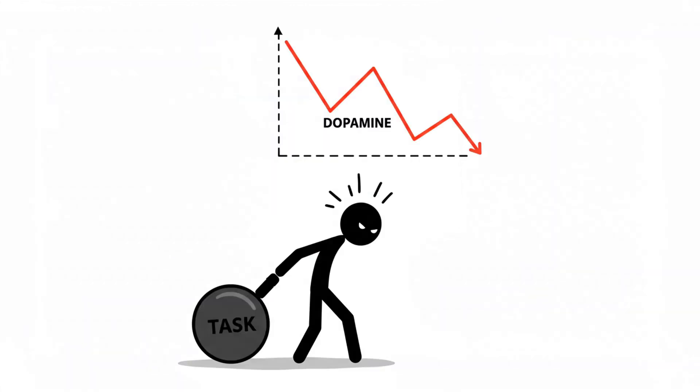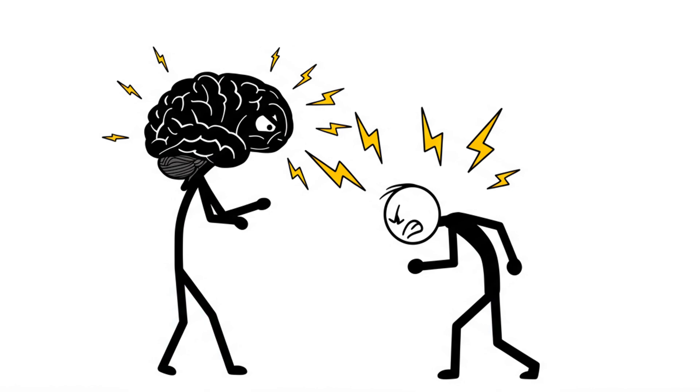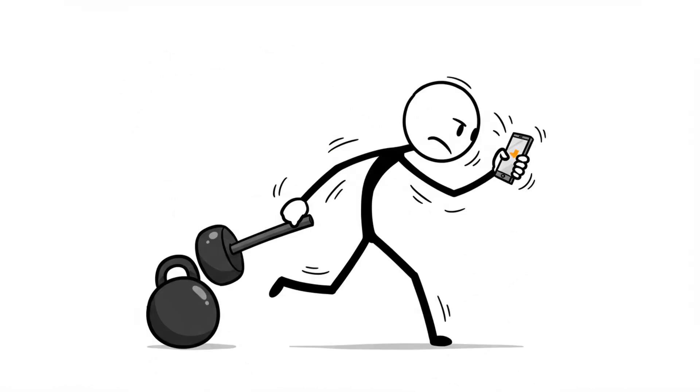The moment you start a hard task, dopamine actually drops. Your brain literally punishes you for trying to do the right thing. That's why you stop. That's why you scroll.